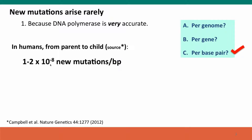10 to the minus 8th is a very small number. We have many, many base pairs in our DNA. But this isn't a complete picture — we've said per base pair, but we also need to ask per what sort of time unit?